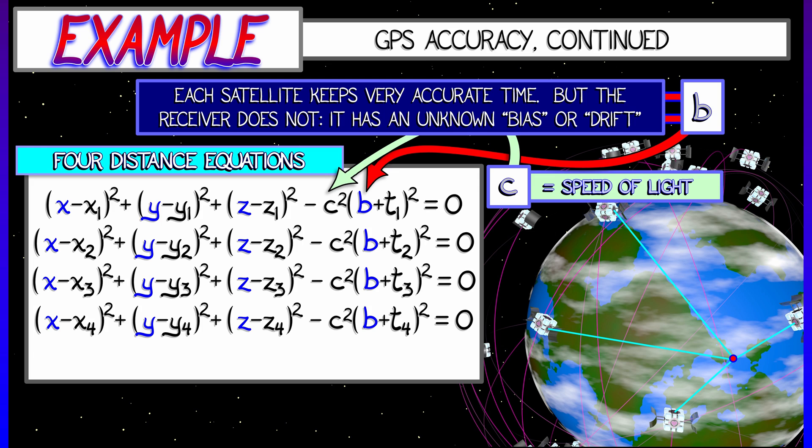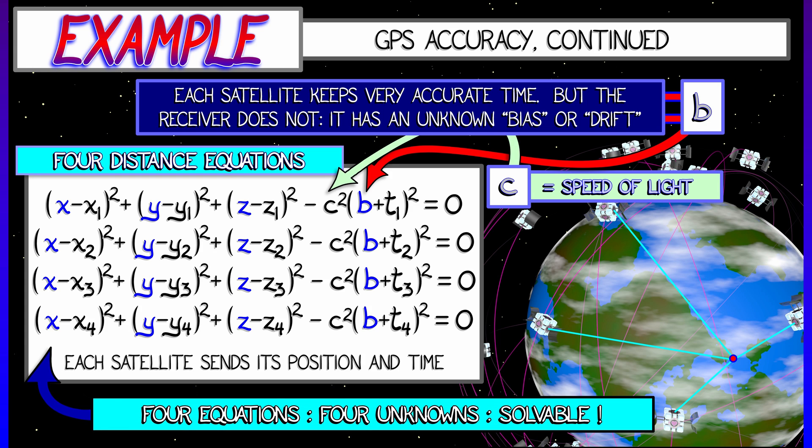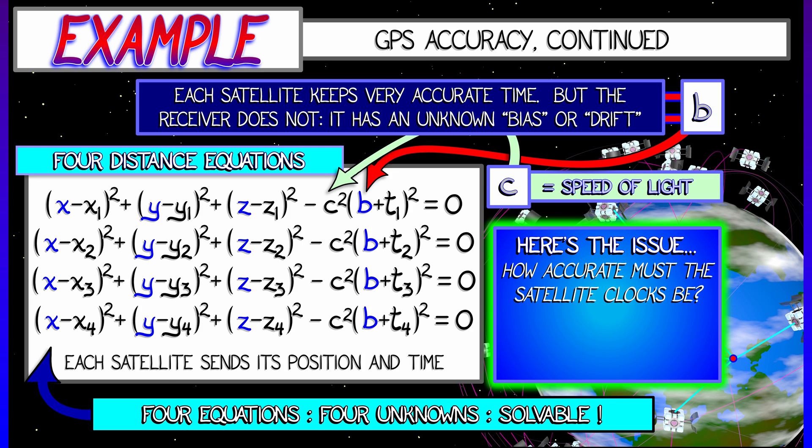That is giving you how many equations, how many unknowns? Four equations, four unknowns. That's good news. This is solvable, and your phone solves this system of quadratic equations, or at least approximates a solution to it, and approximates really well. I'm not going to get into the details of that.